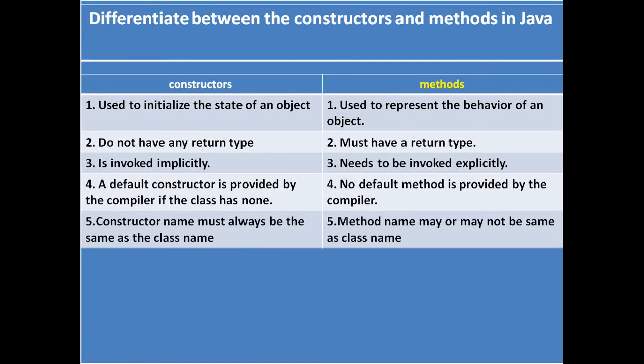Number five: the constructor name must always be the same as the class name. But for a method, the method name may or may not be the same as the class name. So friends, these are the five differences between constructors and methods. Thank you for watching this video lecture — watch my next video lecture for learning new things in Java.